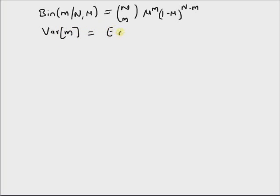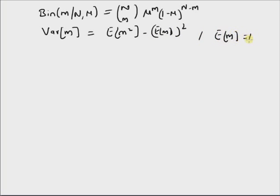Our goal is to find the expression for variance of m, which is defined as expectation of m squared minus expectation of m, whole squared. We already know that expectation of m is equal to mu times n, and our goal is to find the variance of m.